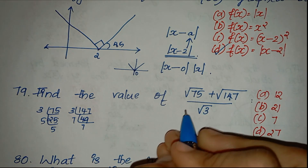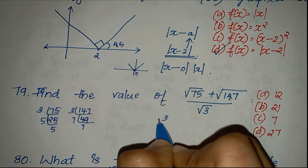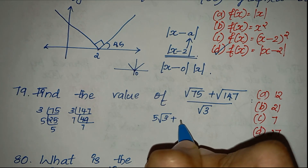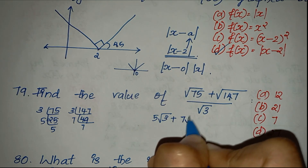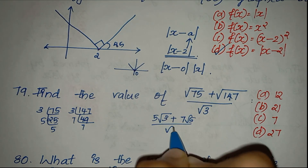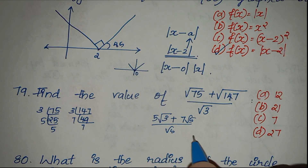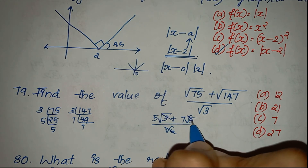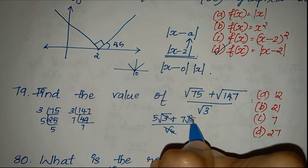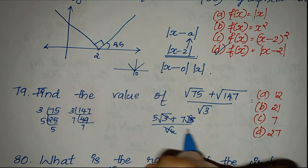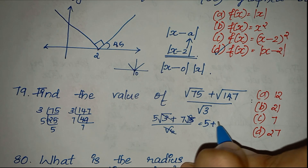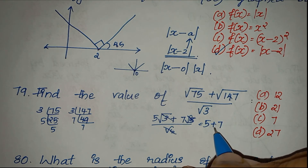Using the value from question 75, if we have 5 root 3 plus 7 root 3 divided by root 3, we can cancel out root 3. That gives us 5 plus 7, which equals 12. The answer is 12.